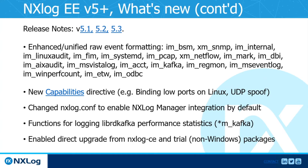The capabilities directive is also useful for allowing spoofing of the source IP on the UDP protocol. The NXLog configuration file shipped with the installer on all platforms has been improved to enable NXLog Manager integration by default — nxlog.conf will include a path with additional configuration files, and manage.conf is one of them, so NXLog will try to communicate with a manager if it exists. There are also new functions for logging Kafka performance statistics, relevant for both input and output Kafka modules. Additionally, we have enabled direct upgrade from NXLog Community Edition and trial versions to the latest version 5.3, though this does not include the Windows builds.